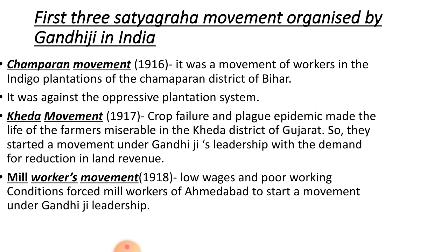Third was the Mill Workers Movement. Gandhiji also started a Satyagraha movement among the cotton mill workers of Ahmedabad on the issue of wage hike. Gandhiji went on a hunger strike. The mill owners negotiated an agreement. Workers got a 35% increase in wages. These were the three Satyagraha movements run by Mahatma Gandhi in India.